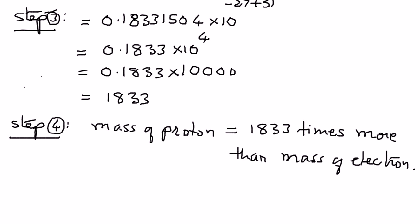In this example, we have seen two very small numbers expressed in scientific notation. We were able to simplify them and tie it back into the given problem by showing that one quantity is 1833 times larger than the other. In my next presentation, we shall look at some more examples related to scientific notation. Thank you very much.